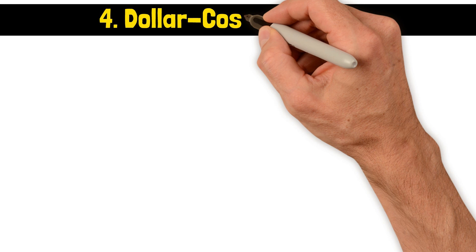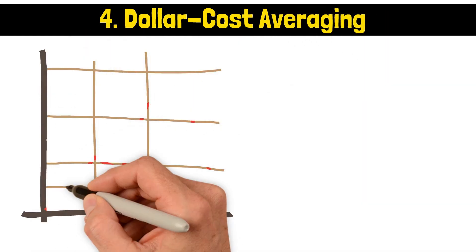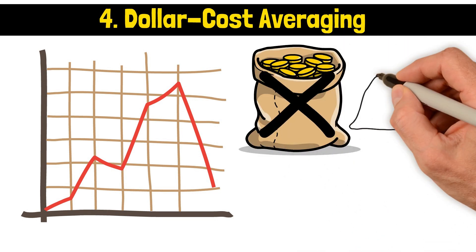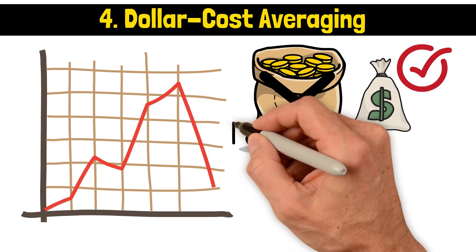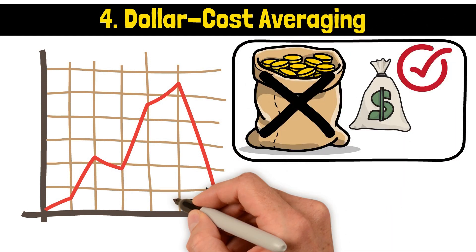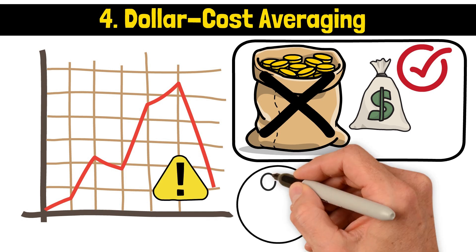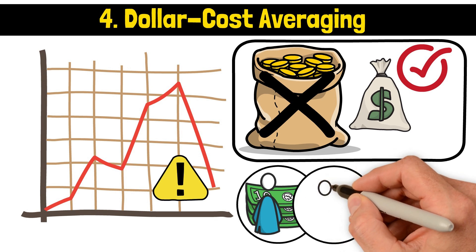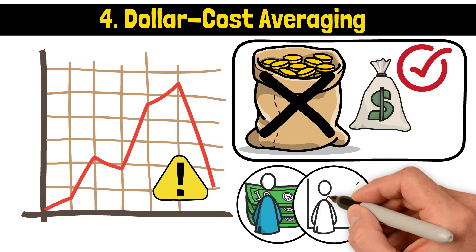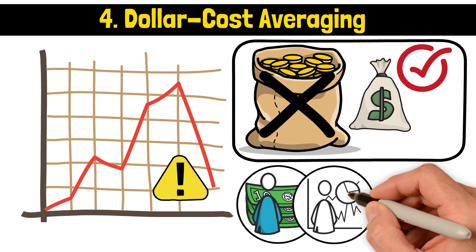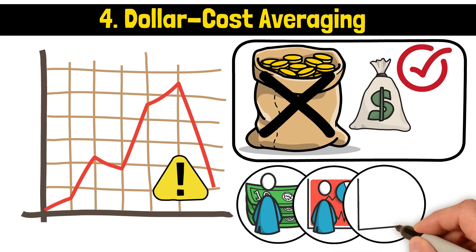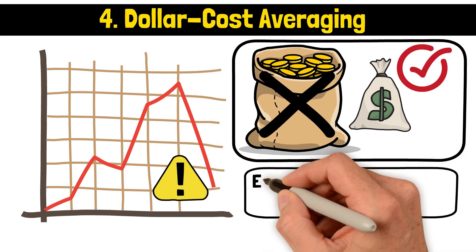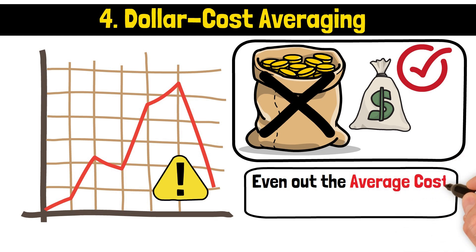Dollar Cost Averaging. The dollar cost averaging is an investment method used to handle the ups and downs of the stock market. Rather than investing a large sum of money all at once, you invest a stipulated amount regularly, no matter the stock price. This helps to even out the cost per share over time. Dollar cost averaging is a strategy that can help mitigate the risk of investing a significant amount of money all at once, right before a market downturn. By buying shares regularly, regardless of market highs or lows, you have the opportunity to purchase more shares when prices are low and fewer when prices are high. This approach helps to even out the average cost over time.